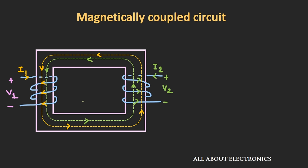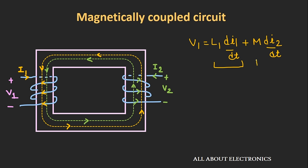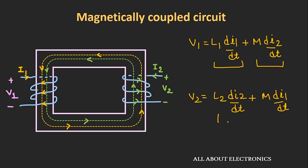If we also include the self-induced EMF, the expression for voltage V1 will be L1·di1/dt + M·di2/dt, where the first term represents the self-induced EMF in coil 1 and the second term represents the induced EMF due to coil 2. Similarly, voltage V2 can be represented as L2·di2/dt + M·di1/dt, where the first term is the self-induced EMF in coil 2 and the second term is the voltage induced due to mutual coupling.